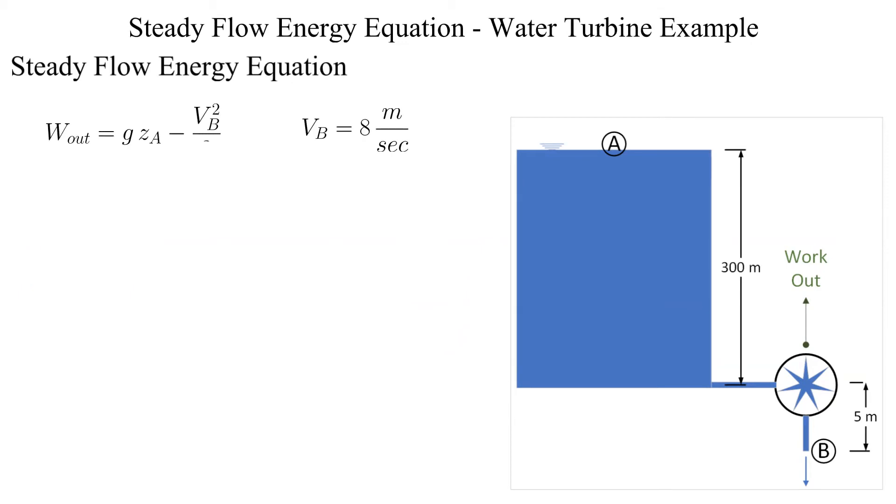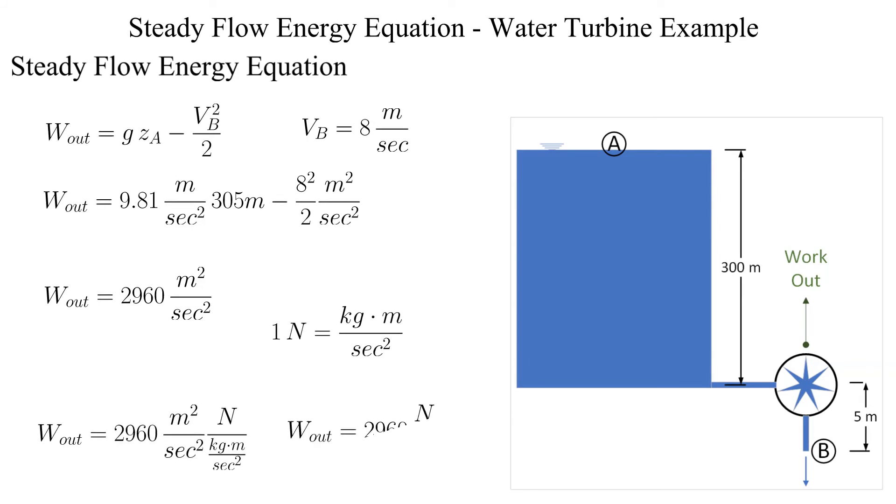With these simplifications we can directly solve for the specific work out from the turbine. Note that the units are in meters squared per second squared which is energy per mass but inconvenient to work with. Let's use the definition of a newton to convert it into more familiar units.